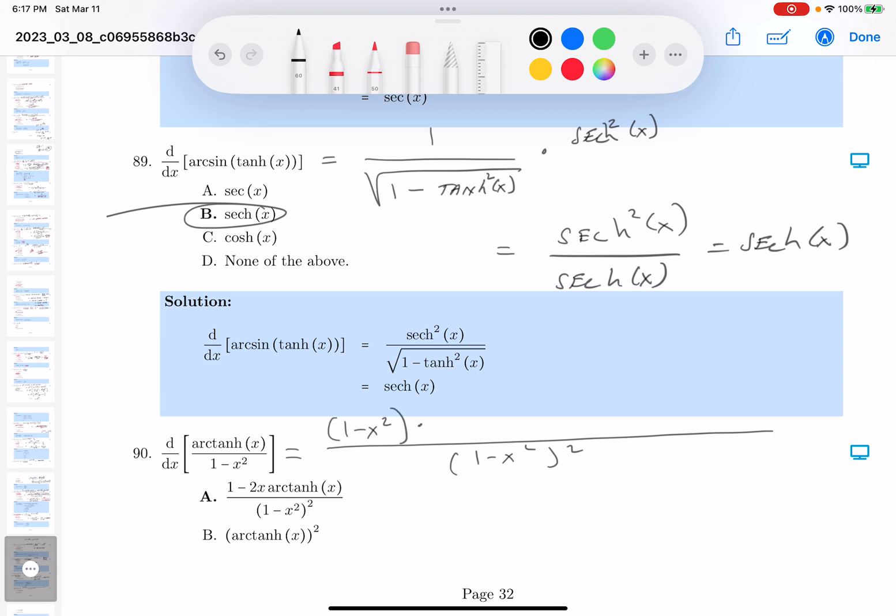times the derivative of the inverse hyperbolic tangent. And again, that's going to be something you need to remember, at least I think. And what's that going to be? 1 over 1 minus x squared. Wow, that wasn't so bad.